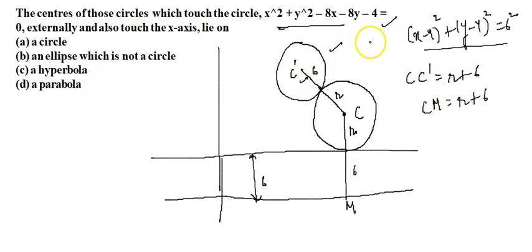Again, if I say, let us say for any point, any circle, this condition will be satisfied that CC dash, this should be equal to CM, and this is equal to r plus 6.